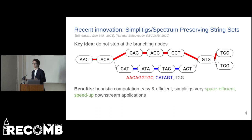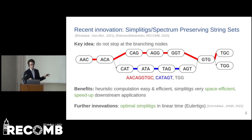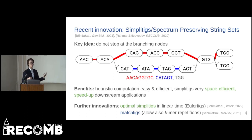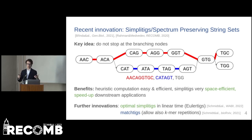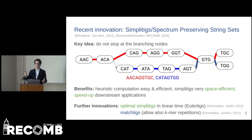We even know how to compute simplitigs optimally in linear time. We can improve the compressibility even further if we relax the vertex-disjoint constraint and also allow k-mer repetitions. This way we obtain matchtigs, and in our example we can merge the blue and grey simplitigs into a single matchtig.